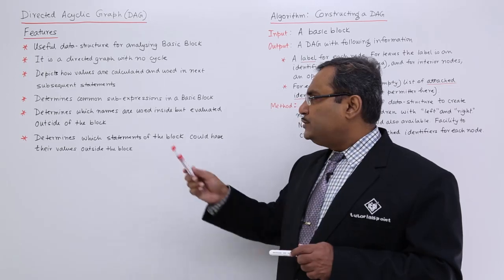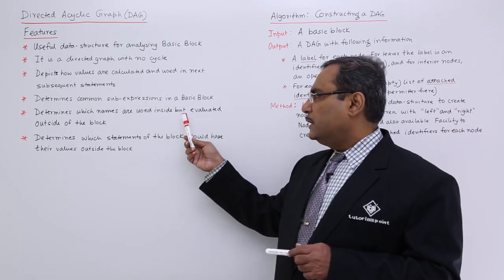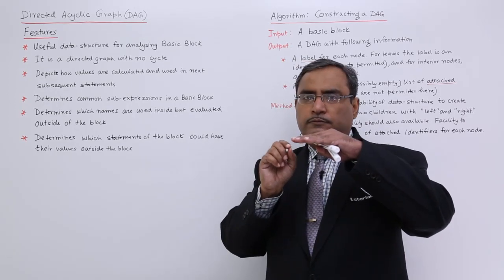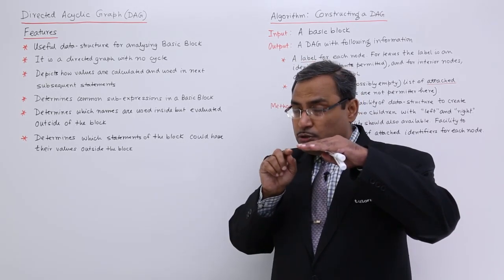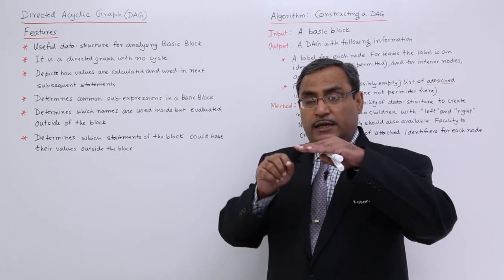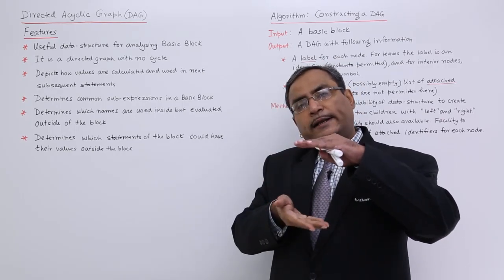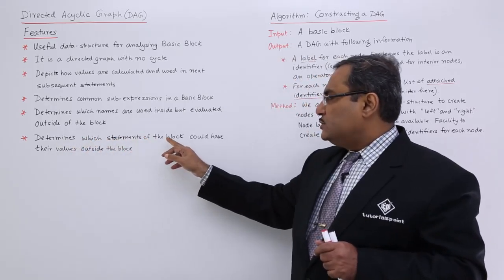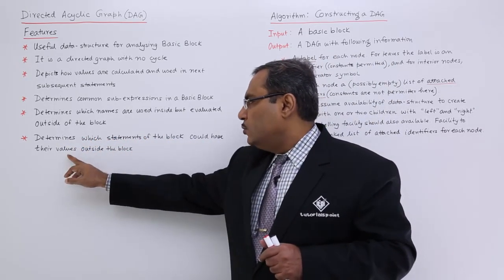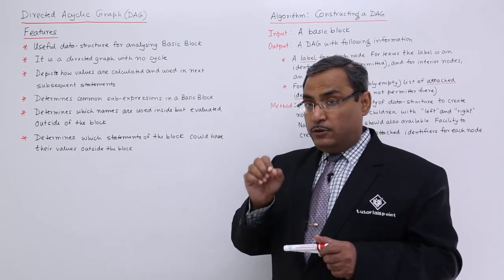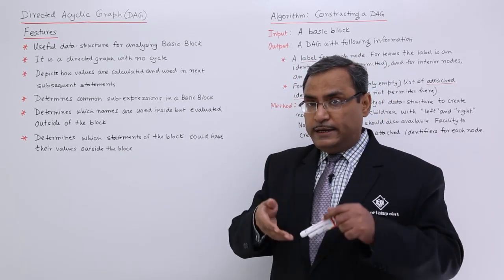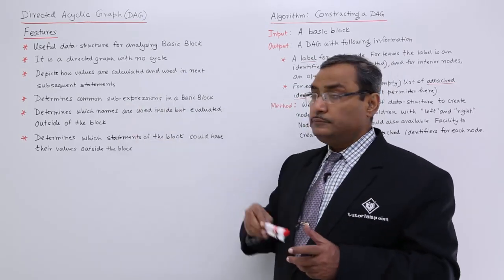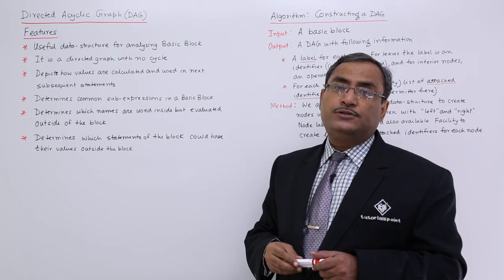DAG also determines which names are used inside but evaluated outside of the block. So within a basic block we may be using some names, but those names have not been calculated or initialized there — they have been initialized outside of the block, and that can also be detected. It also determines which statements of the block could have their values accessed outside of the block.